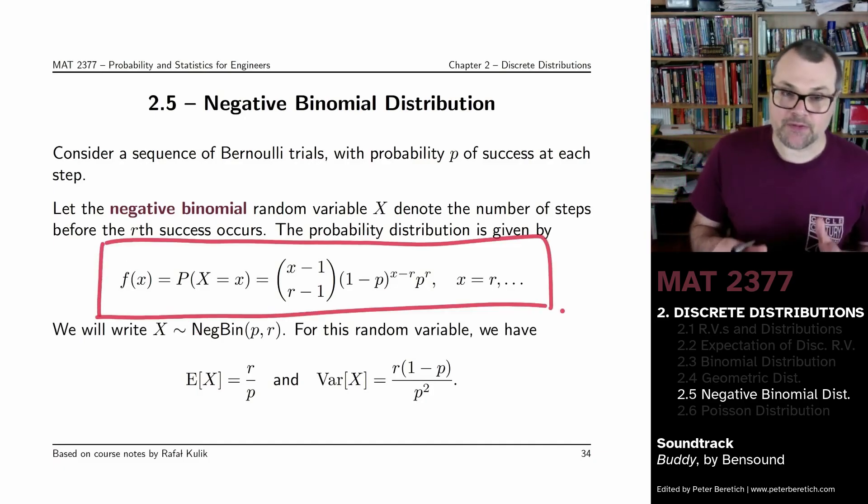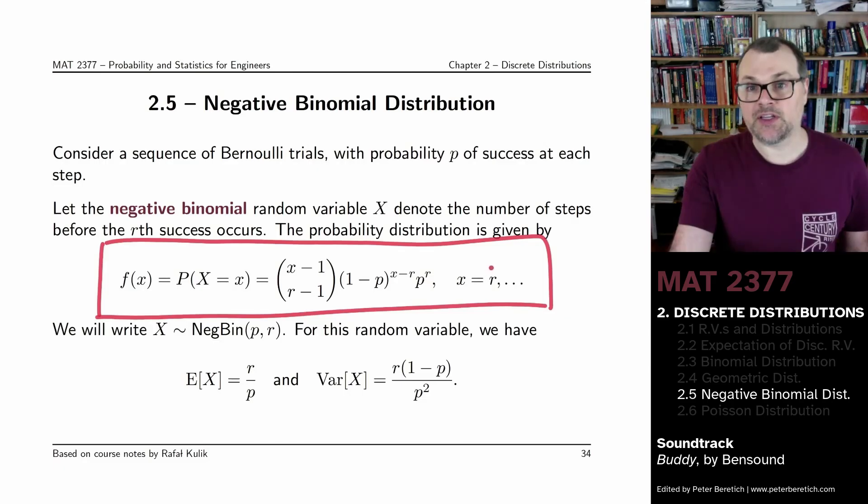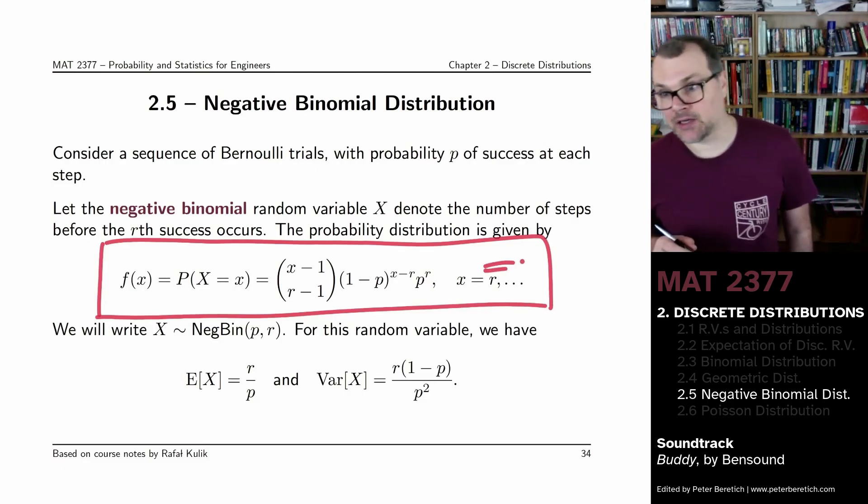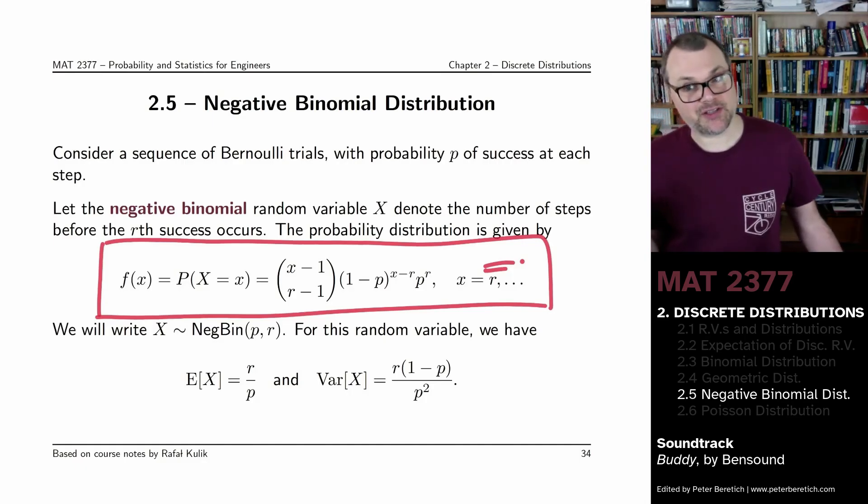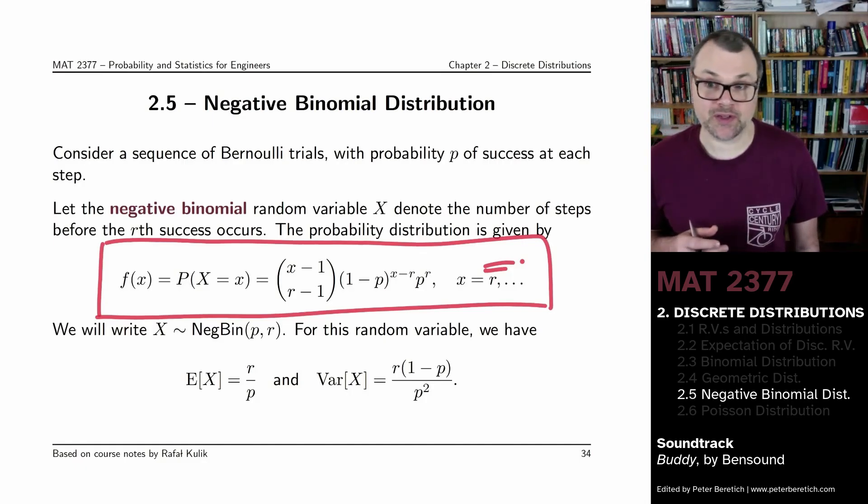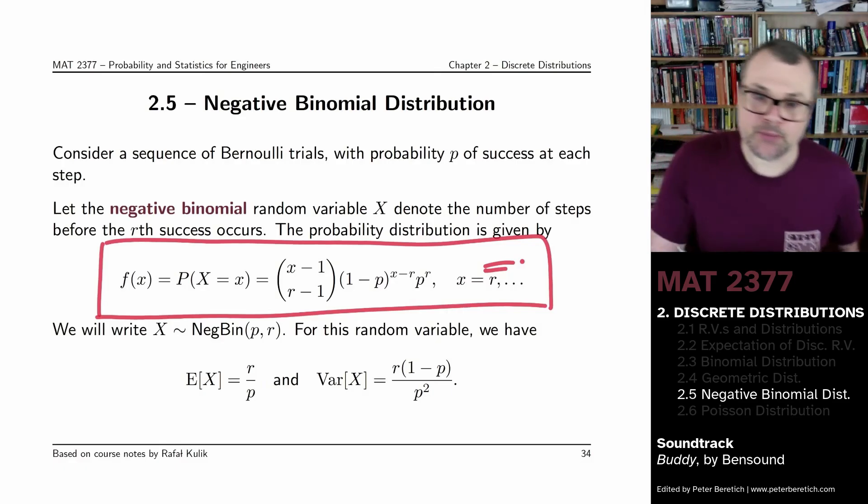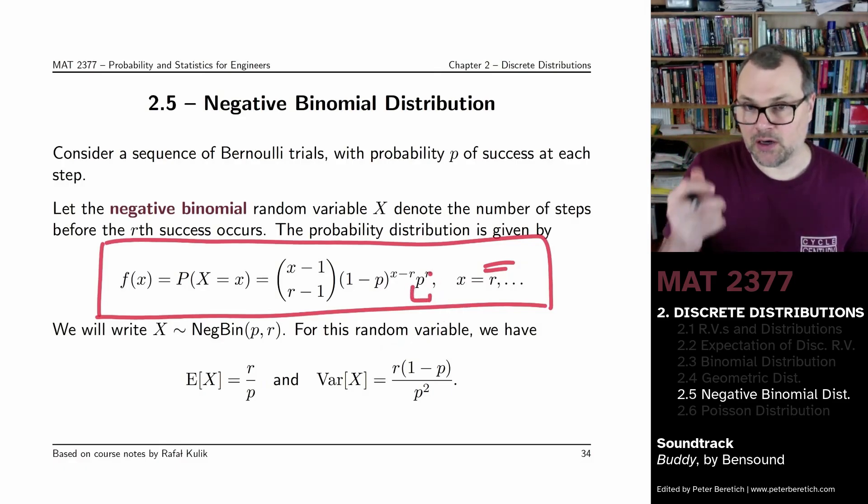You'll notice right off the bat that in order to obtain R successes, you need to have run the experiment at least R times. You can't have R successes if you have fewer than R trials. The probability of R successes, that would be P to the R, makes sense.